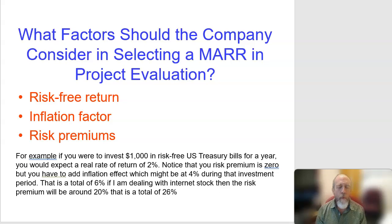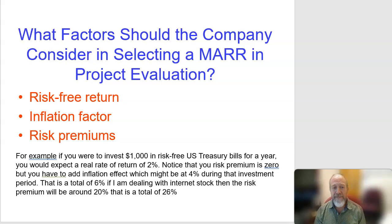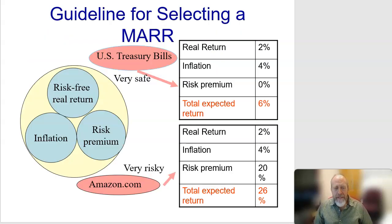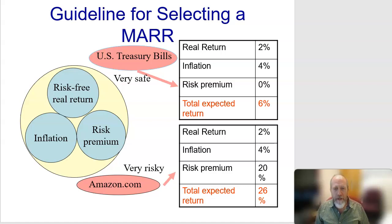What if instead of Treasury bills we do something like a high-risk internet stock where there's a one-in-five chance you won't make the money back? Now you've got a risk premium associated with that investment. Even if the risk premium is 20%, it also has to include that six percent from the other pieces. The real return plus inflation, which eats into it, plus the risk premium — add it all together and there is your MARR.